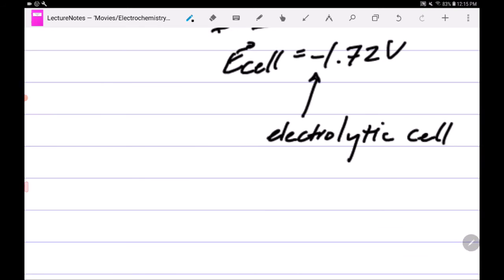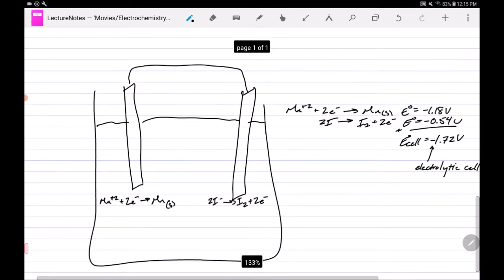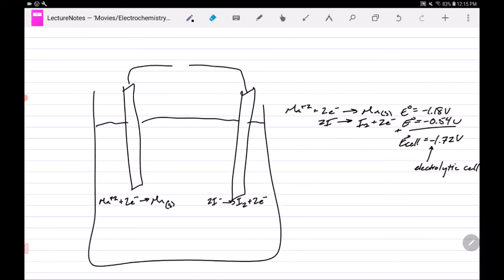We know this is going to be an electrolytic cell because the cell potential is negative. This is a non-spontaneous cell. So this thing requires energy in order to operate.